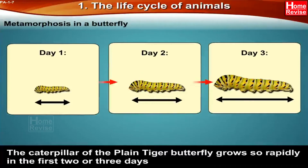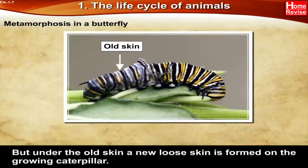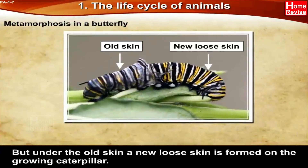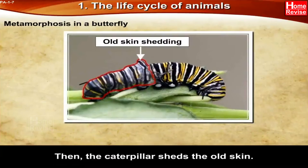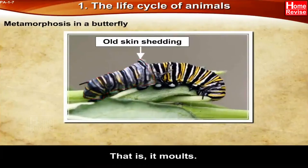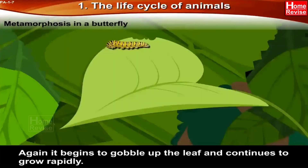The caterpillar of the plain tiger butterfly grows so rapidly in the first two or three days that it does not fit in its skin anymore. But under the old skin a new, loose skin is formed on the growing caterpillar. Then the caterpillar sheds the old skin — that is, it molts. Molt means to shed old skin to make way for new growth. Again it begins to eat the leaf and continues to grow rapidly.